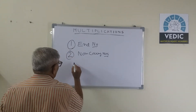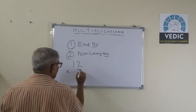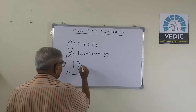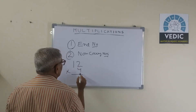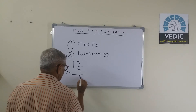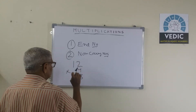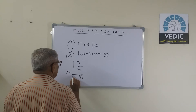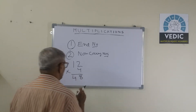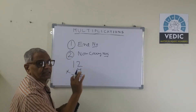Let us take an example. 2 multiplied by 4. If we multiply the digits in the units space, it will result in a single digit answer. There is nothing to be carried over to the tens space, and our tens space answer is simply 4. So this is an example for non-carry numbers.